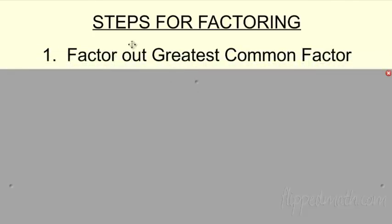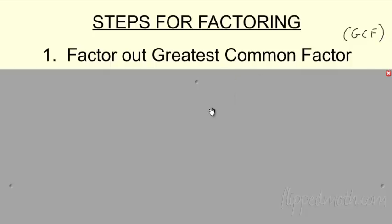The first thing we're going to do is factor out the greatest common factor — the GCF. Remember the GCF from the very first section where you're just pulling out a number, a letter, or a variable — sometimes both. The first thing we're going to do is pull that out.